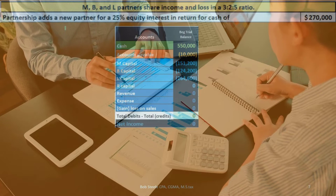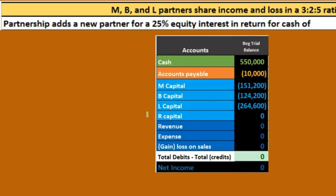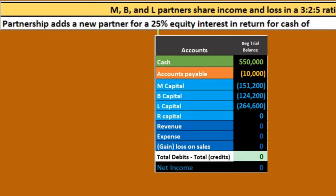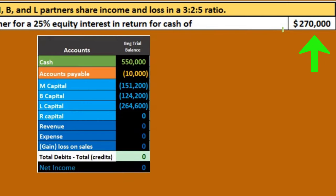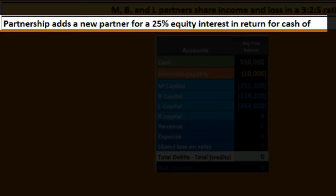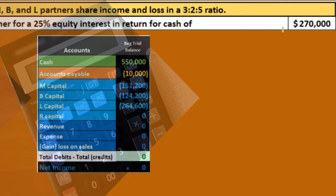This is a variation of the same problem — very similar, except now we're bringing a new partner onto the books. The same 25% interest has been agreed upon by the partnership and the new partner. The new partner is going to give the partnership $270,000 in exchange for a 25% interest in the partnership.